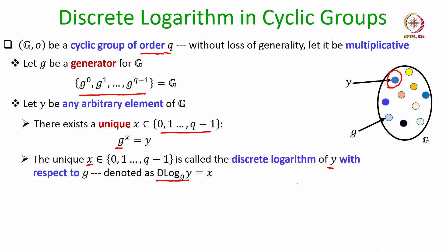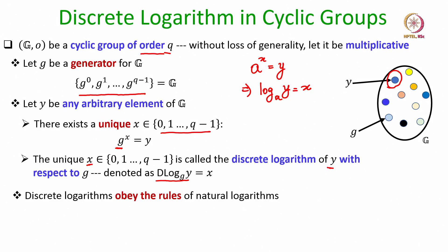The discrete logarithm is very similar to the natural logarithm: just as log_a(y) = x means a^x = y, discrete logarithm is analogous in the discrete world of cyclic groups. Like natural logarithm, discrete logarithm also obeys nice properties. The discrete log of the identity element with respect to the generator is 0, because g^0 is defined to be the identity element.